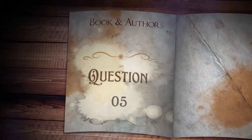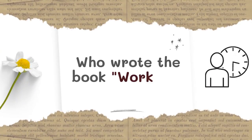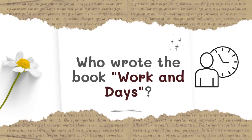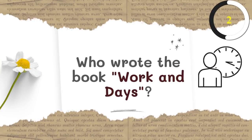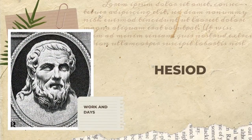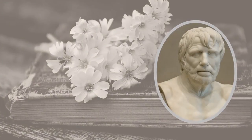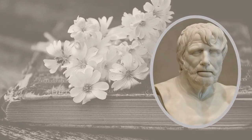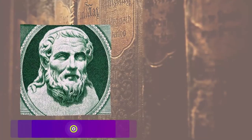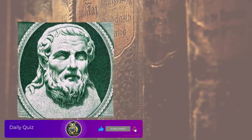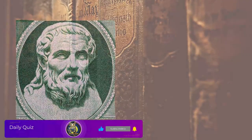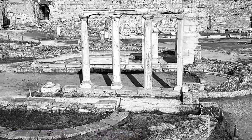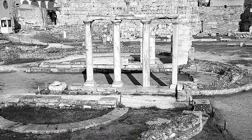Question number five: who wrote the book Works and Days? The answer is Hesiod. Hesiod was one of the most influential of the Greek poets, but to be frank, we know extremely little about him. He seems to have been active around 700 BCE, a time when the Greek written language was not widespread. This would make Hesiod a rough contemporary of Homer, the other foundational figure in Greek poetry and mythology.